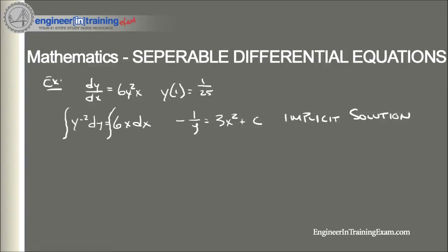Now we can easily determine the explicit solution, but before we do so let's use the initial condition to determine the constant of integration. We know that y(1) = 1/25, so we plug in those values: 1 divided by (1/25) = 3(1)² + C, and solving we find that C = −28.